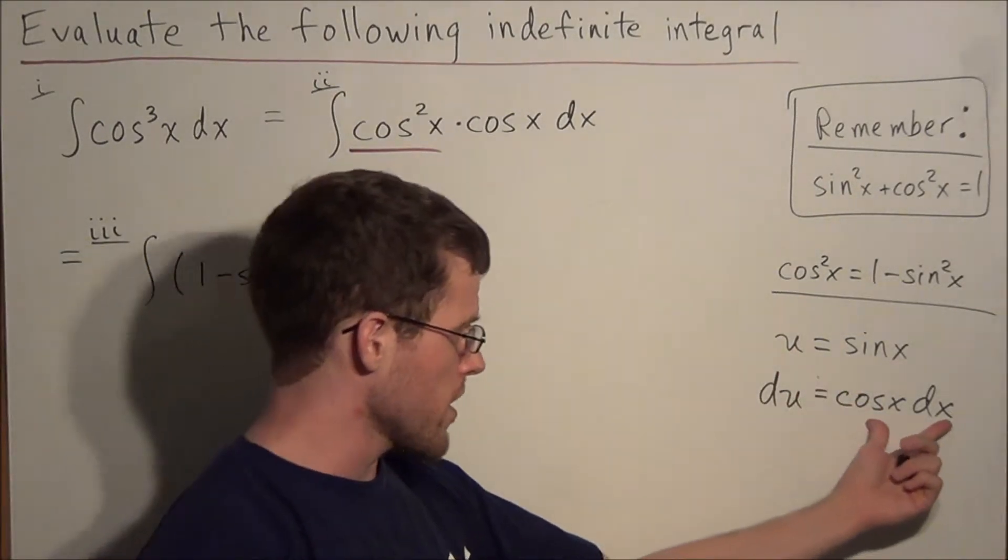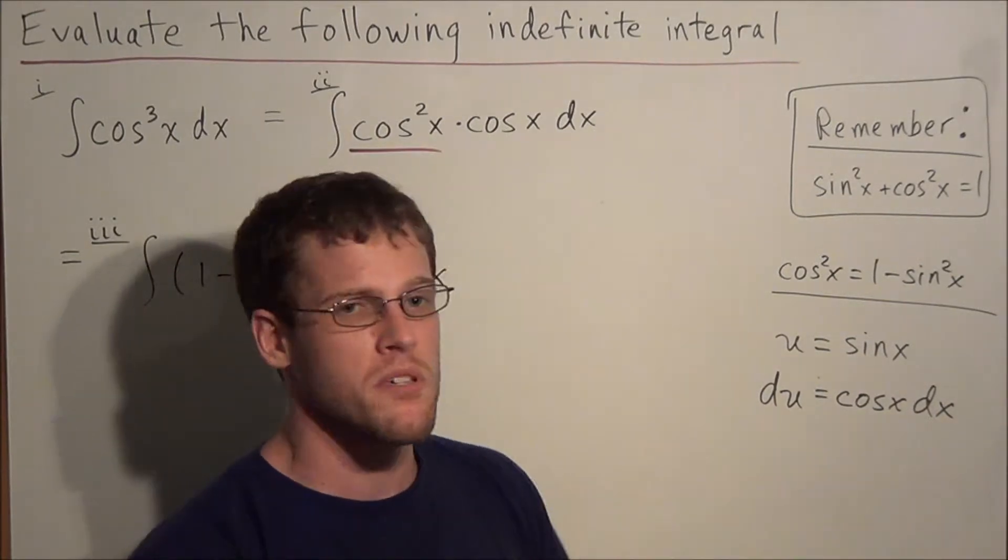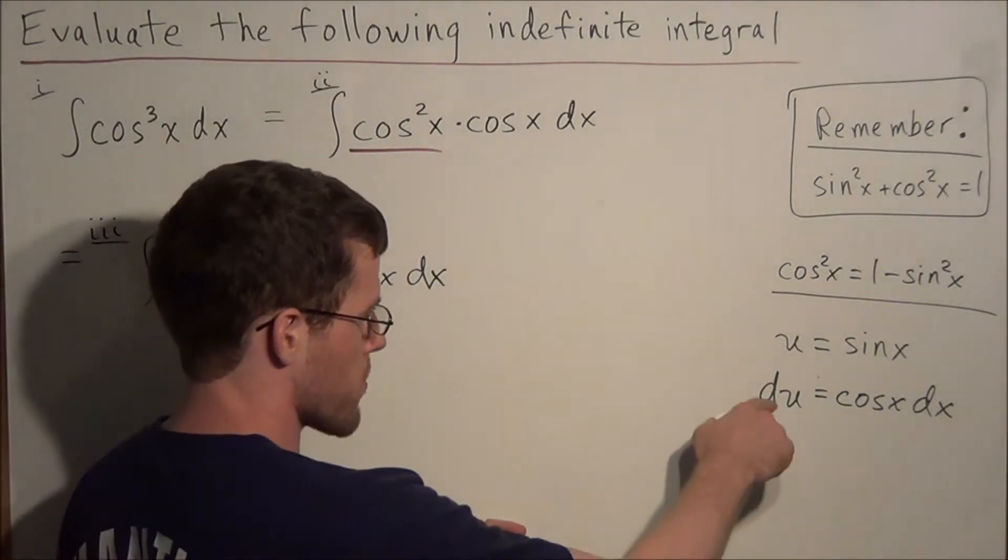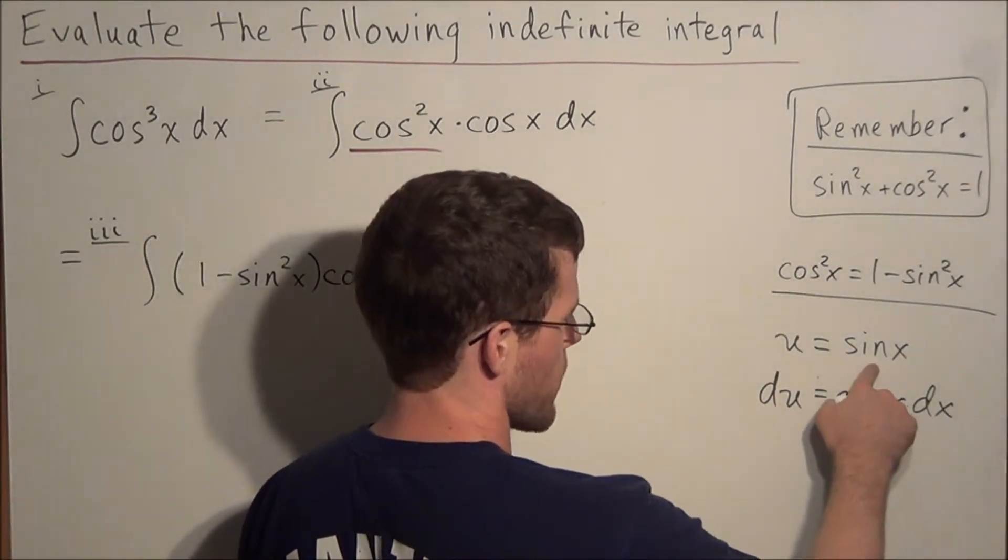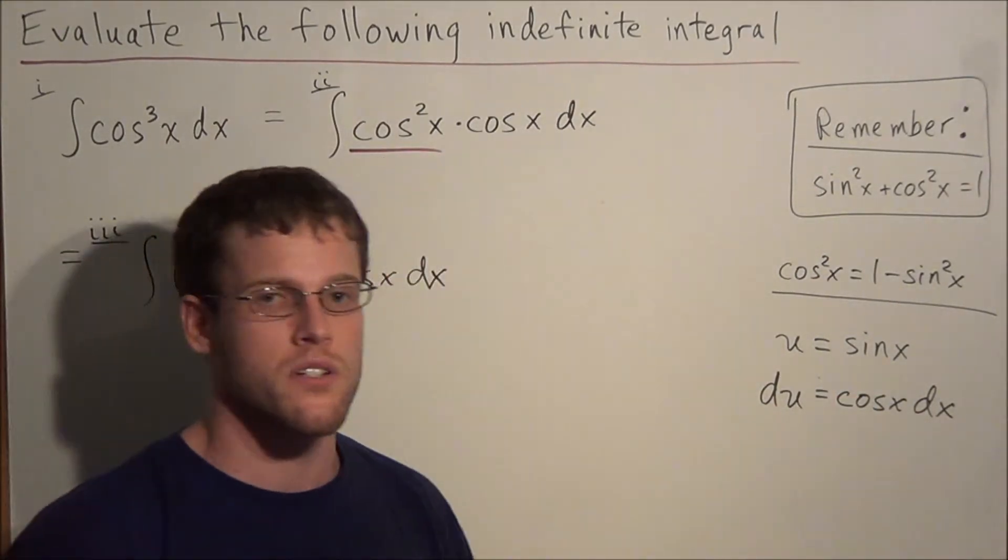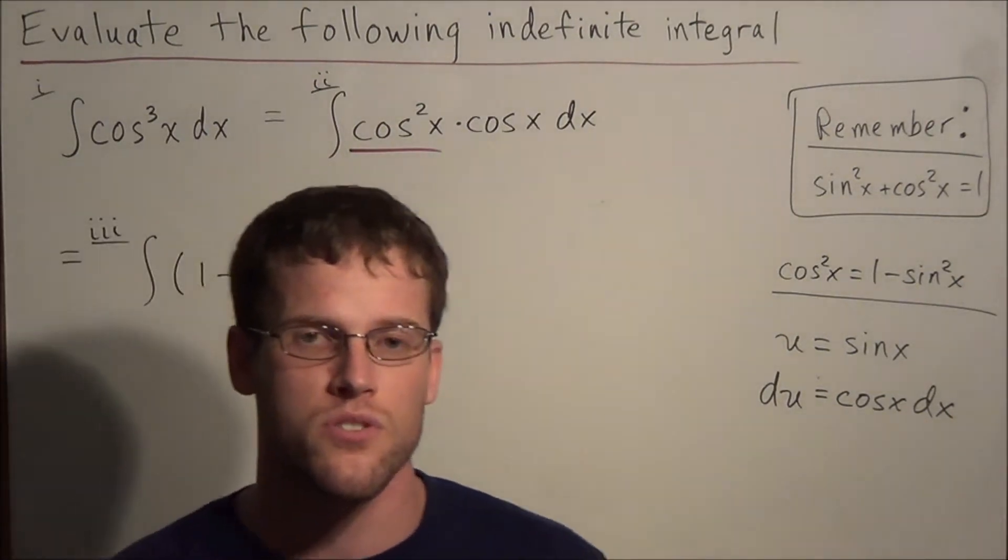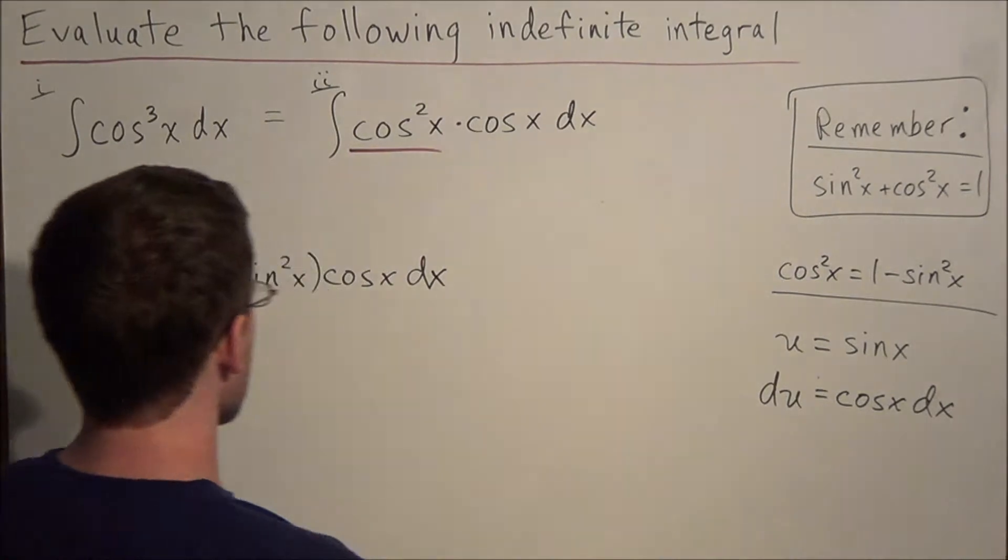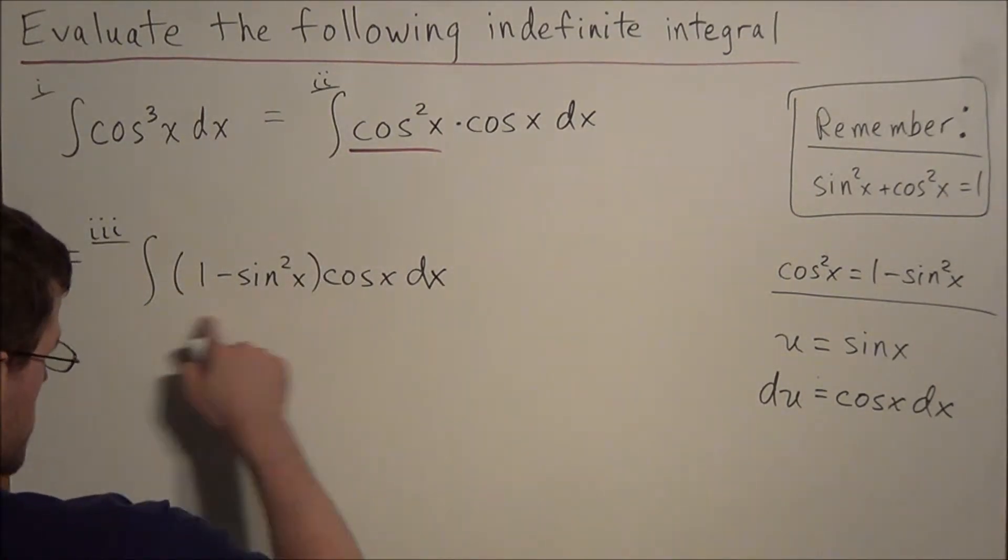The theory behind why we're writing cosine x dx could be explained with implicit differentiation, but for now, just know that you're going to write du equals, and you find the derivative of sine x, but you have to write dx next to it because that allows us to make the substitution correctly. So now using this information, we could rewrite this line here.